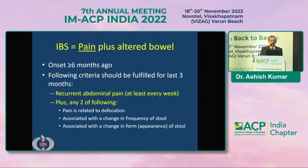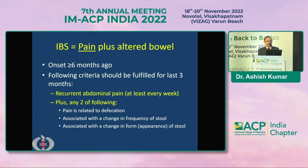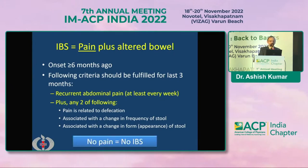Coming to IBS: IBS is basically pain plus altered bowel habit. In the diagnosis of IBS, pain is an essential criteria. Usually patients with IBS will have symptoms for more than 6 months, and the following criteria should be fulfilled within the last 3 months: there should be recurrent abdominal pain occurring almost every week, and along with the pain, at least 2 of the following should be present — the pain is related to defecation, there is a change in frequency of stool (diarrhea or constipation), or there is a change in form of stool (loose stools or lumpy/hard stools). If there is no pain, we cannot label it as IBS.